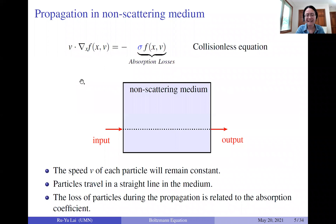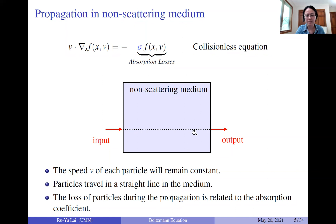If we consider particles traveling in a non-scattering medium — meaning there is no scattering effect — then the collision coefficient k is zero, so there is no scattering operator. In this case, particles travel in a straight line. If we place a particle, it will just go straight, follow the dotted line, and hit a boundary. During propagation, once we send in a particle and receive it on the other side, there may be some particle loss between the incoming and outgoing parts, related to the absorption coefficient.